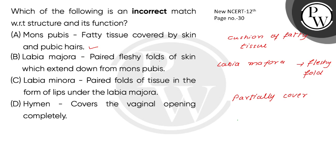Labia majora is a paired fleshy fold of skin which extends down from mons pubis — this is correct. Labia minora is a fold of tissue in the form of a lip, under labia majora — this is correct. Hymen covers the vaginal opening completely. Wait — not completely, but partially. Okay?